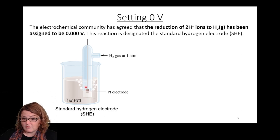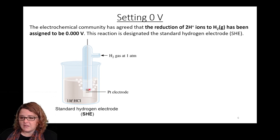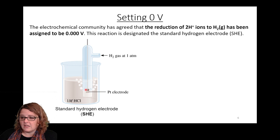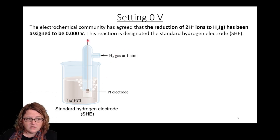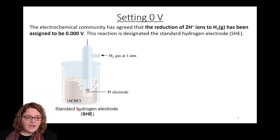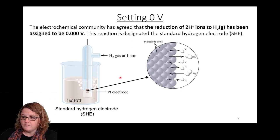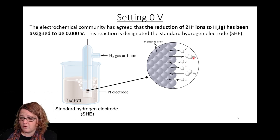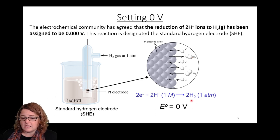Platinum is a common choice of electrode when we need a solid surface over which electrons can flow when the reaction doesn't involve a solid. So the reaction is H+ plus two electrons making H2 gas — the platinum electrode is literally just a solid surface over which those electrons can flow. This setup is referred to as the standard hydrogen electrode, the SHE, and it has been assigned a potential of zero volts by convention. The H+ ions in that one molar HCl solution accept electrons from the platinum surface, becoming H2 gas, going from oxidation number plus one to zero. This has been assigned a potential of zero volts.